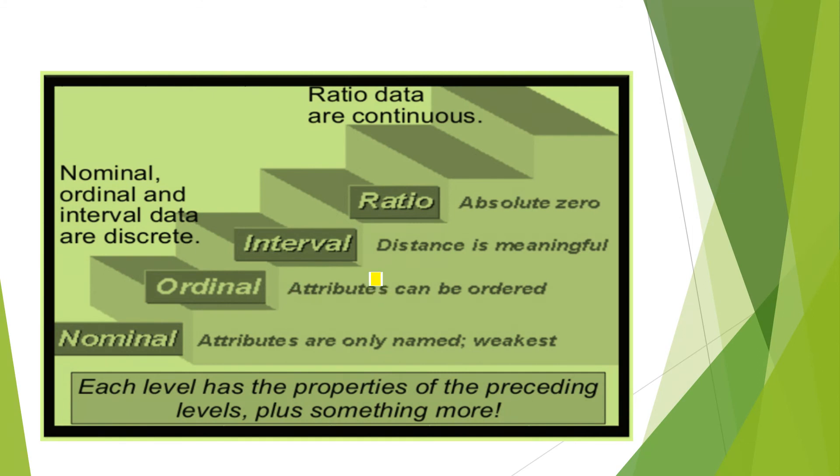In this picture, you can have some clear view as well. Nominal, ordinal, and interval data are discrete. And what is the discrete variable? The variables which we can count. Nominal, there are four measurements. Nominal, ordinal, interval, and ratio. Out of these four, nominal, ordinal, and interval are discrete. While on the other hand, ratio data are continuous. We are starting from here. Nominal attributes are only named. This is the weakest measurement. Ordinal attributes can be ordered. Interval, distance is meaningful. Just like I gave the example of IQ score or temperature. Ratio absolute zero. In interval, no true zero. Here absolute zero. Each level has the properties of the preceding levels plus something more.